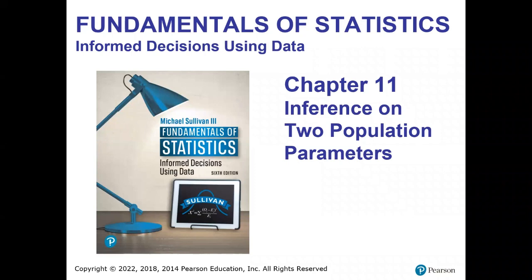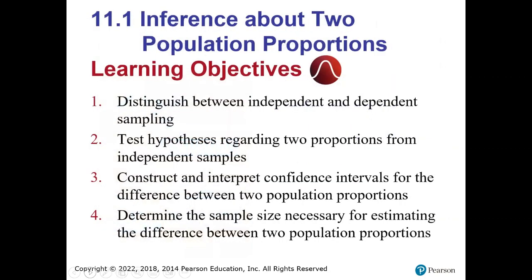We are moving on to chapter 11, the last chapter we are going to work on. We are going to basically combine everything we did in chapters 9 and 10, but with two sample populations. Before we get started, we have to discuss independent and dependent samples, then test hypotheses for two independent proportions, construct a confidence interval, and determine a sample size as necessary.